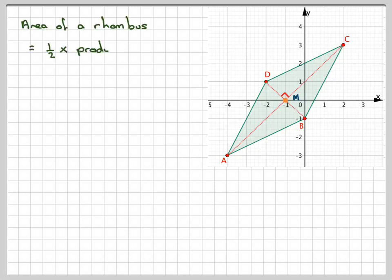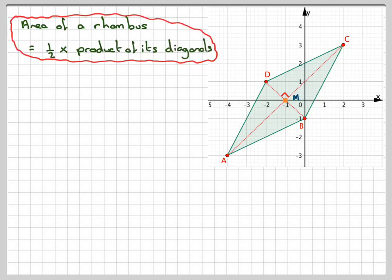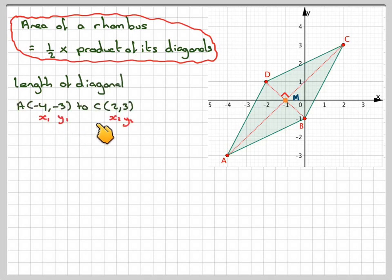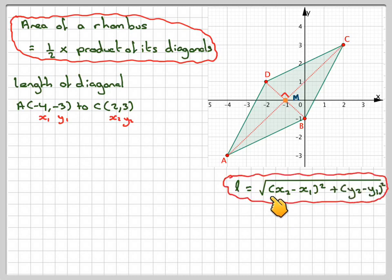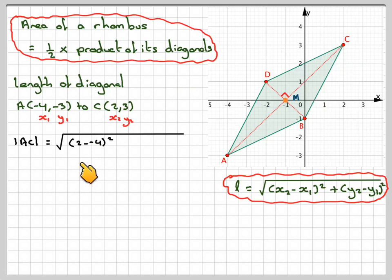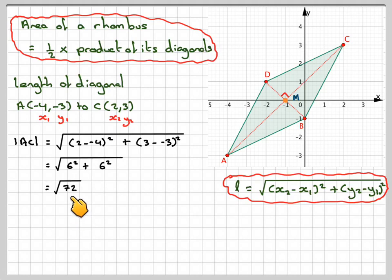The area of the rhombus is one half times the product of the diagonals. The length of diagonal AC, from A(−4, −3) to C(2, 3), using the distance formula √((X2−X1)² + (Y2−Y1)²), gives √((2−(−4))² + (3−(−3))²) = √(6² + 6²) = √(36 + 36) = √72.